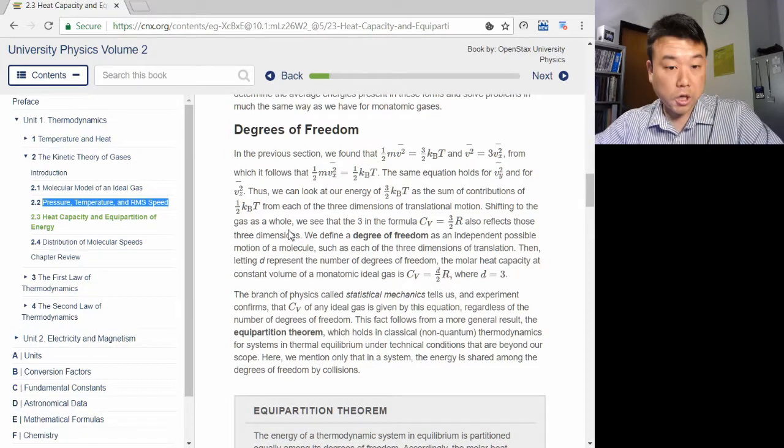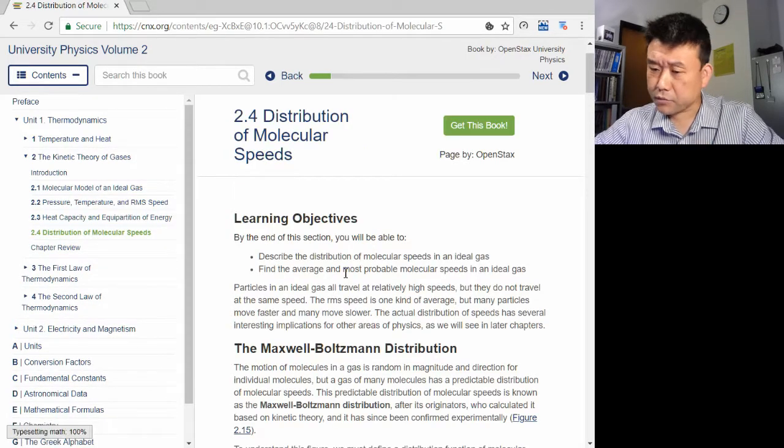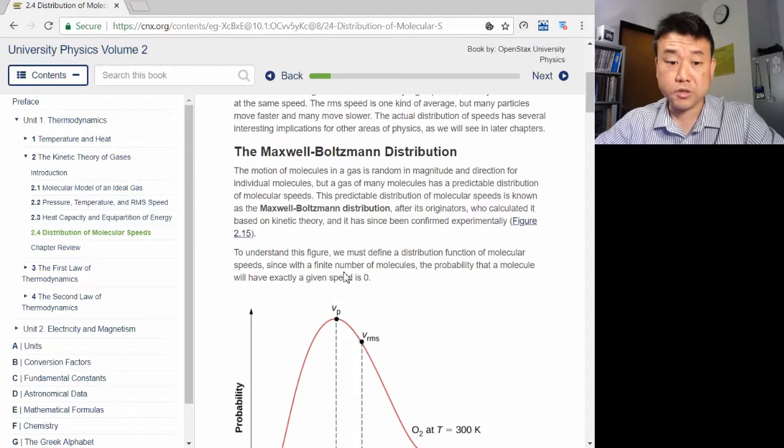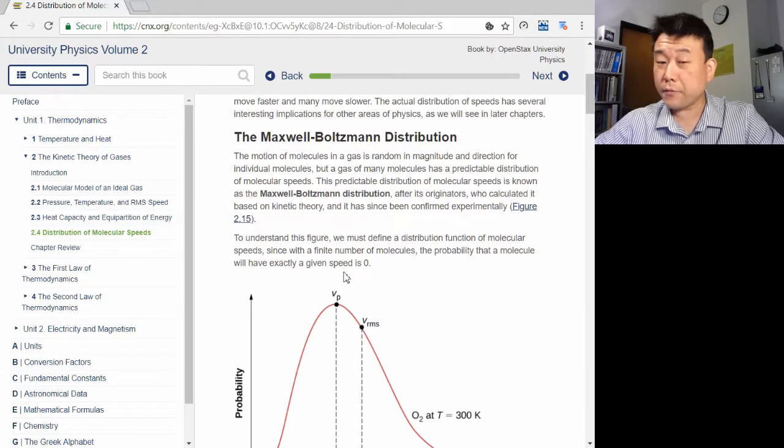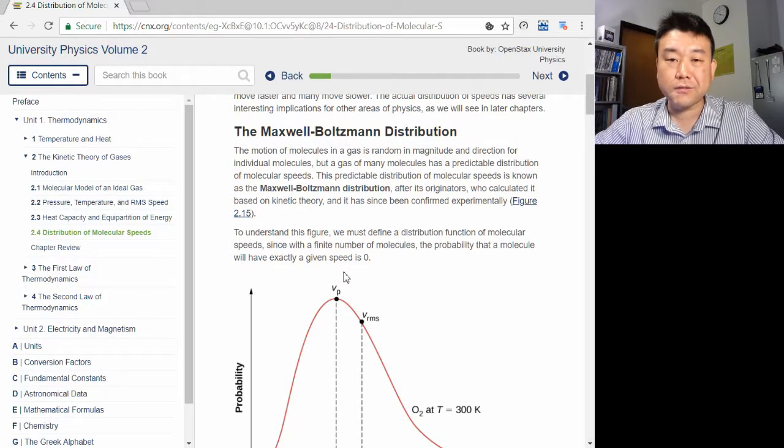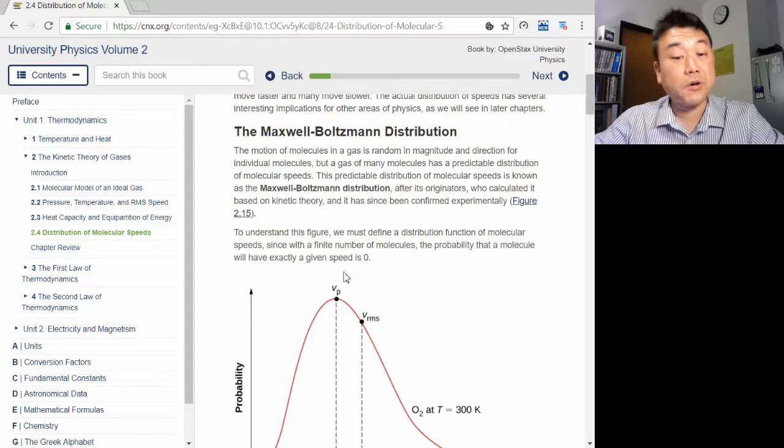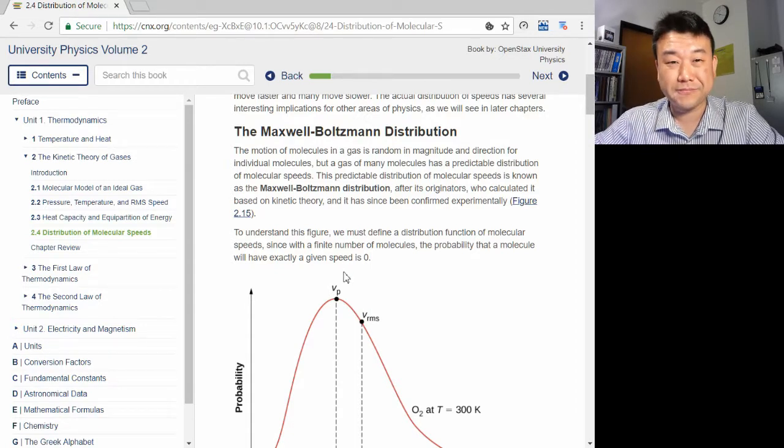All right, that's all. The section 2.4 covers very good materials to know, especially Maxwell-Boltzmann distribution. If we are going deeper into statistical mechanics, we would cover it. But in the interest of time, we are going to skip it, so that we can spend more time on chapters 3 and 4. Bye.